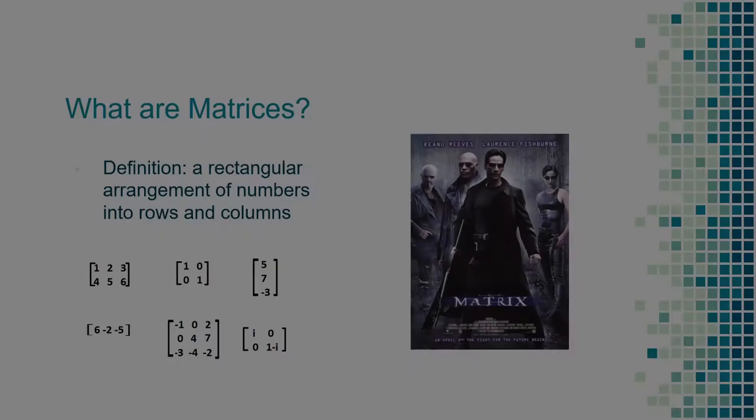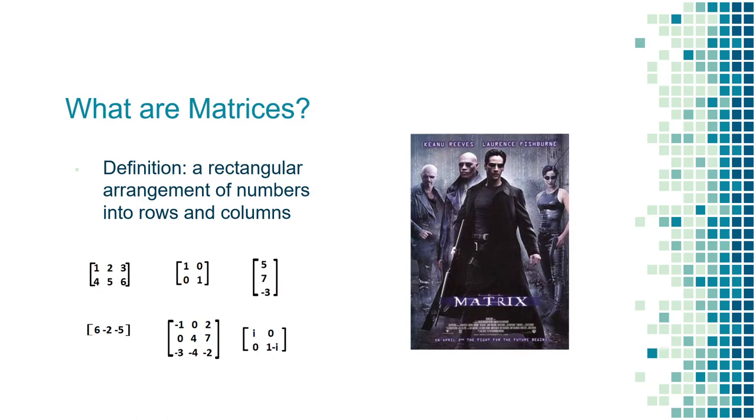First off, what are matrices? You've probably heard of the movie The Matrix, but that's not what we're talking about here. In mathematics, matrices are just an arrangement of values in rows and columns. For example, in the top left of the bottom image, we have a matrix 1, 2, 3, 4, 5, 6.